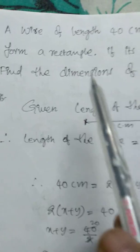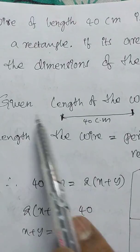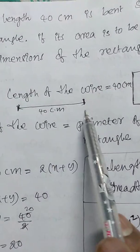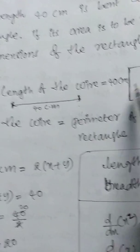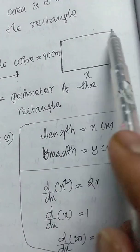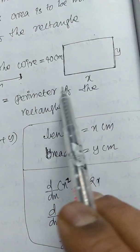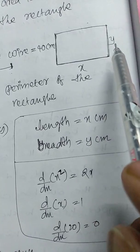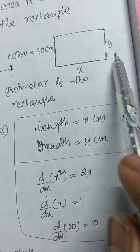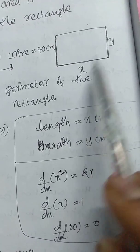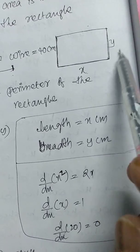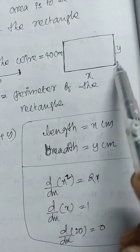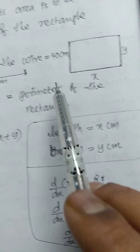First of all, write the given values. Given: length of the wire is 40 cm, bent so as to form a rectangle. Let us assume length of the rectangle is x, and breadth of the rectangle is y. We have to find out the dimensions of the rectangle.